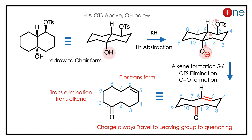Finally, you have an alkene and a ketone in the system with ring opening. This is very notable because we are going from a ring to an open-ring structure. The key concept to learn here is that charge always travels to the stable site to quench itself.